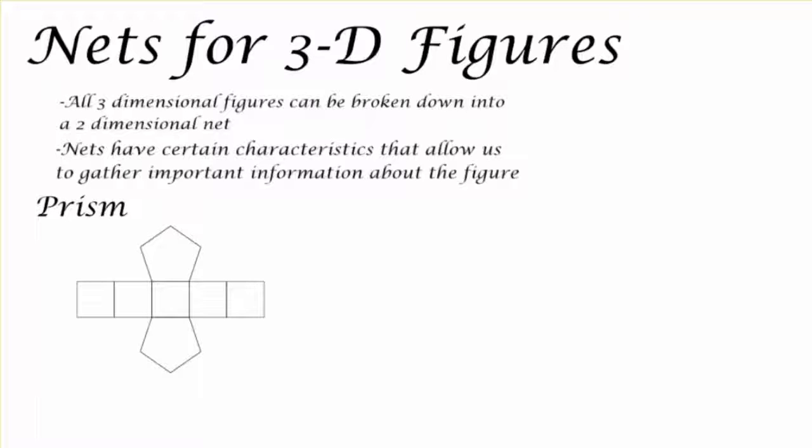Let's think about the nets of most prisms. When I look at the net of a prism I've got to think what shape do I see twice? In this case I see two pentagons. So those two pentagons are the bases of my prism. I'm going to have a pentagonal prism because I can count five sides.